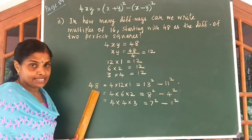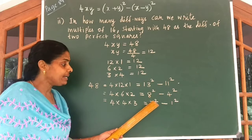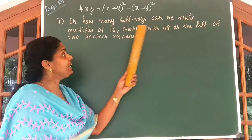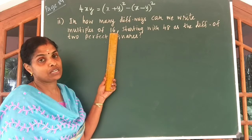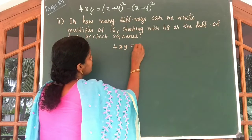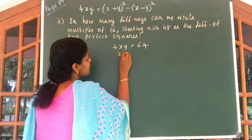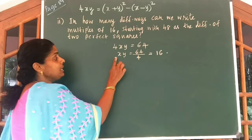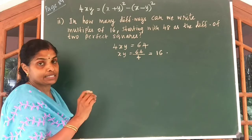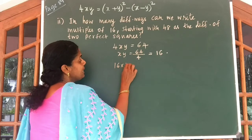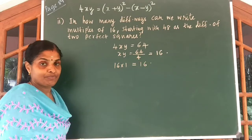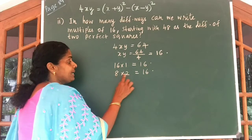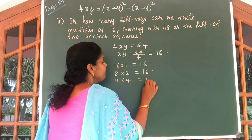So we can write 48 as the difference of two perfect squares in three different ways. The next multiple of 16 is 4 into 16, which gives you 64. Let us write 4xy is equal to 64. So xy is equal to 64 by 4, which gives you 16. We have to find two numbers whose product is equal to 16. We can take x is 16 and y is 1; or 8 into 2 gives 16; or 4 into 4 also gives 16.